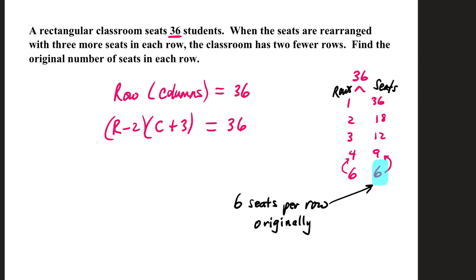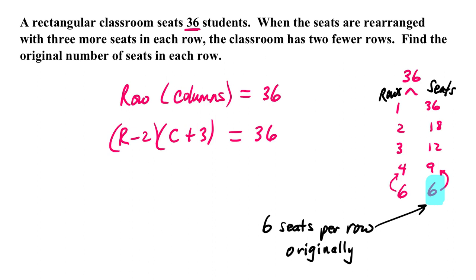A rectangular classroom seats 36 students. When the seats are rearranged with three more seats in each row, the classroom has two fewer rows. Find the original number of seats in each row. Total rows times columns has to have 36 seats in it. The classroom has two fewer rows when three more seats are added to each column.